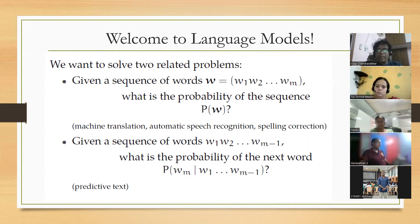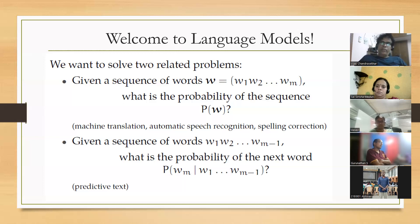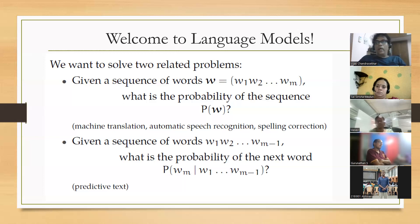For example, take the most common three words: 'I love you.' There's a probability associated with this sentence. What would the probability be for the sentence 'love you I'?